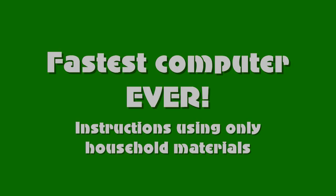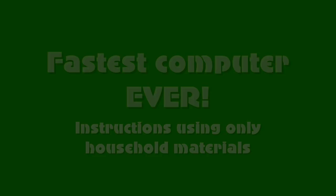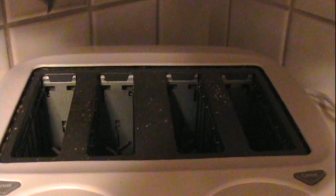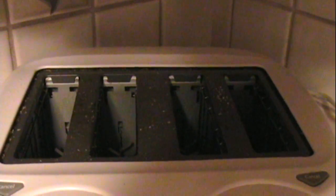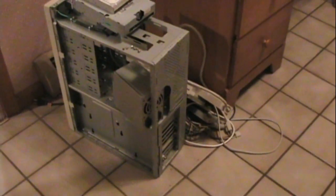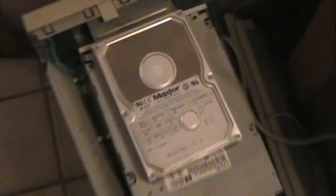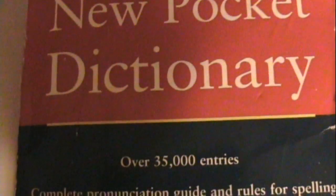We're going to build the fastest computer ever today. We're going to get a four-column toaster. The metal prongs have to be in this position or else it won't work. We need a tower computer's hard drive, most preferably some Mint-Suzer-T — Lipton I think works the best — and its dictionary, pocket-sized, because you can't exactly fit a full dictionary into a toaster.